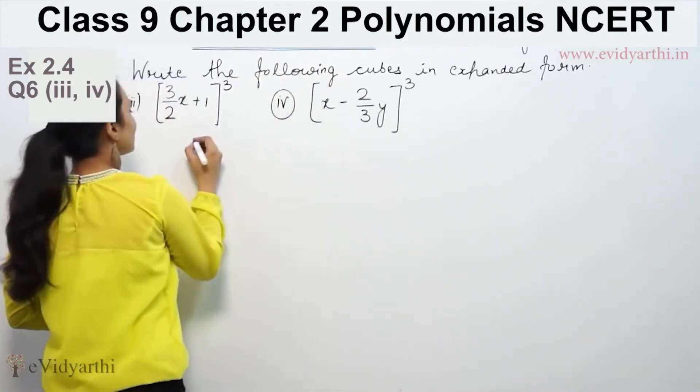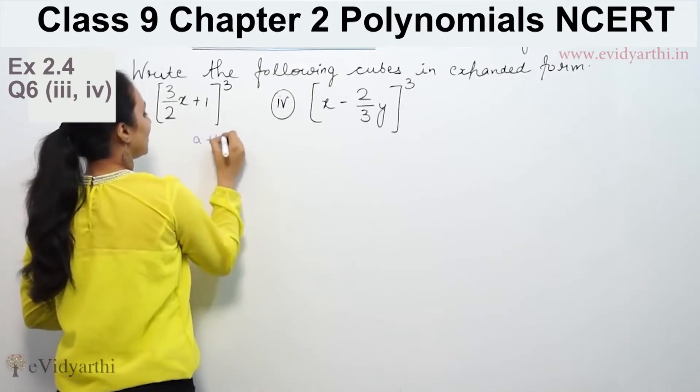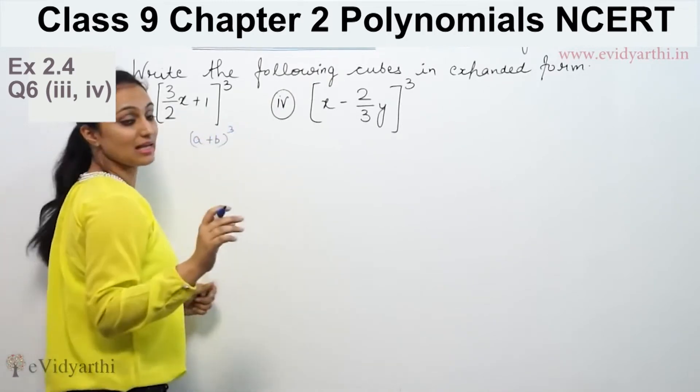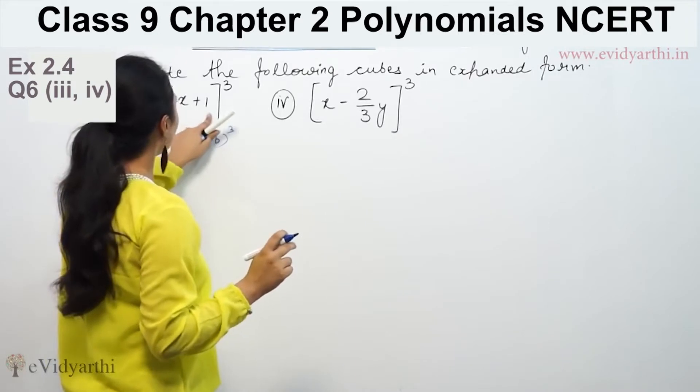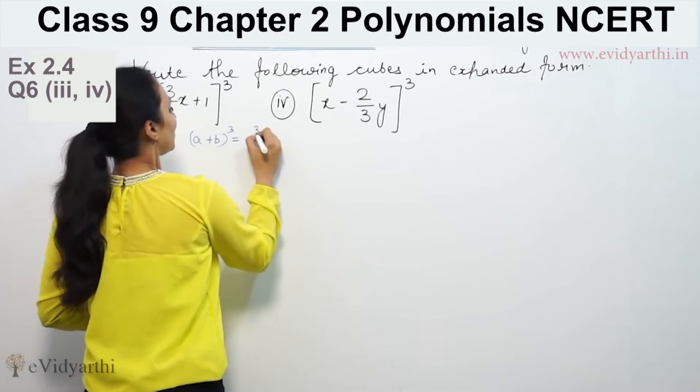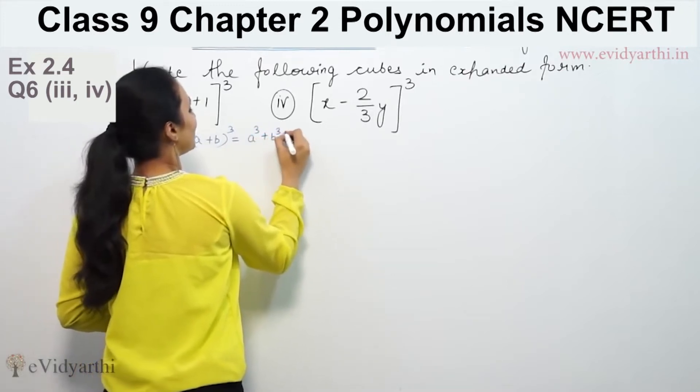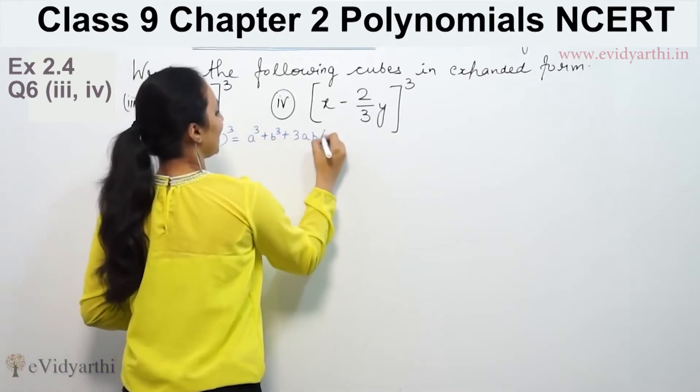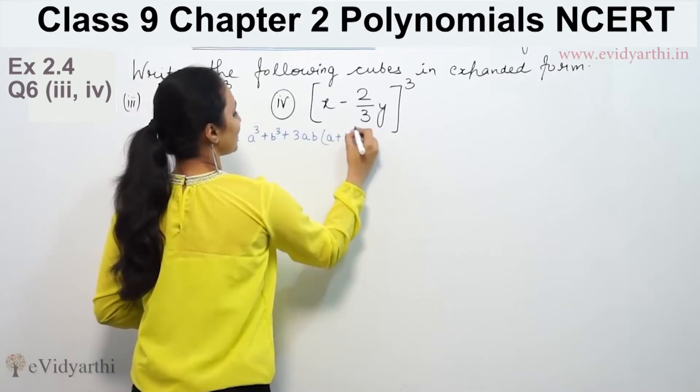We have a cube's formula or identity: (A + B)³. So we will write (A + B)³ = A³ + B³ + 3AB(A + B).